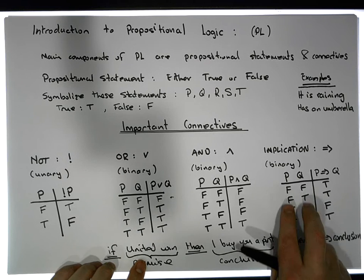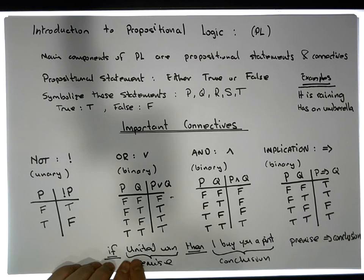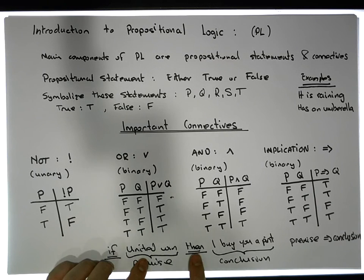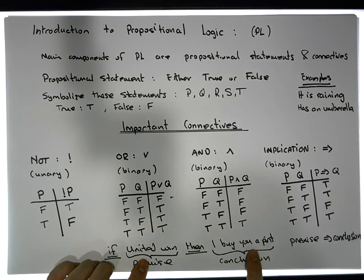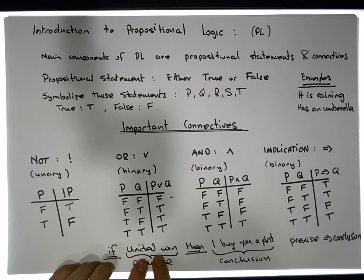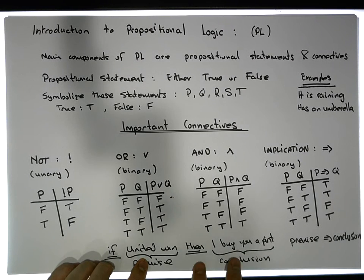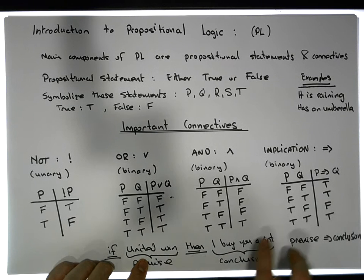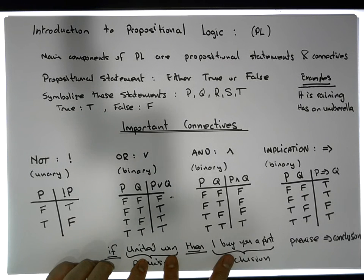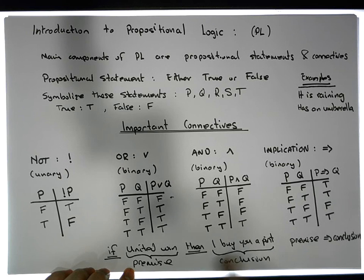For the false/false case: United didn't win and I didn't buy you a pint. I said 'if United win, then I'll buy you a pint.' United didn't win, I didn't buy you a pint — there's no expectation on me. You're not going to come to me saying I never bought you a pint. So if it's not false, it must be true.